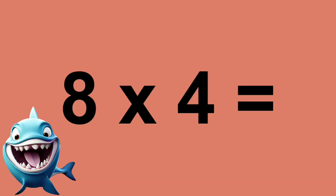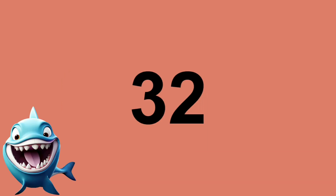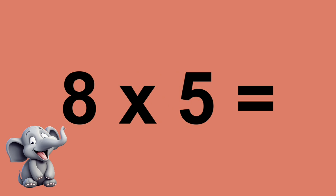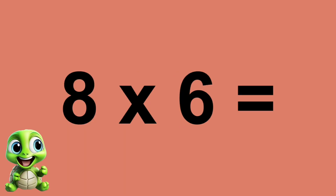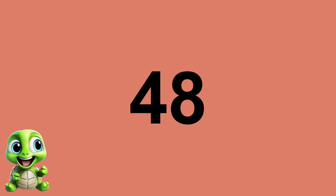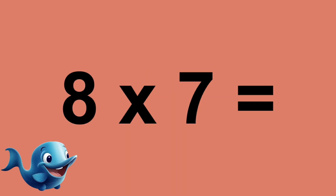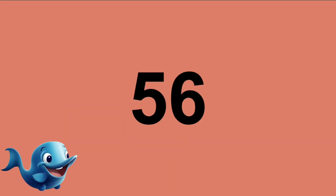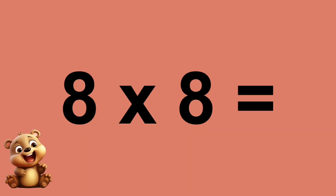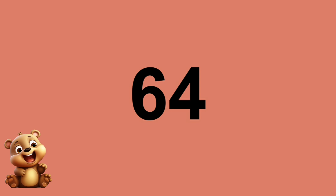Eight times four equals thirty-two. Eight times five equals forty. Eight times six equals forty-eight. Eight times seven equals fifty-six. Eight times eight equals sixty-four.